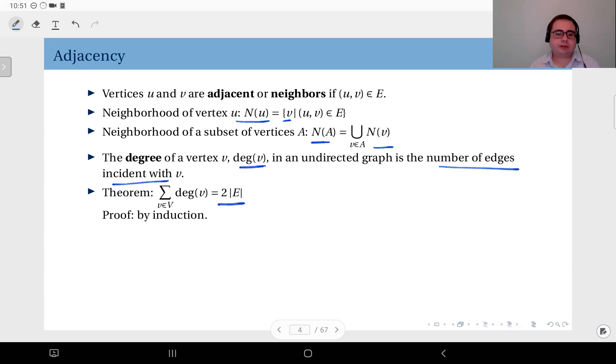The base case you can select as a graph with zero edges. For instance, if you have a graph consisting of some nodes but no edges, all the degrees of the vertices are zero, so their sum equals two times the number of edges which is zero. So the base step is true.